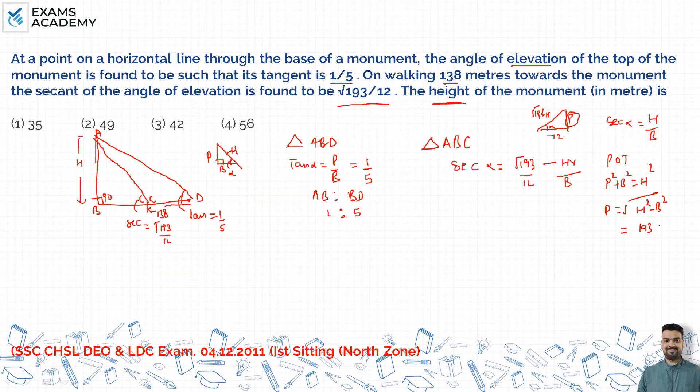Minus base is 12, then 12 squared is 144. So it is root 49, so perpendicular should be 7. Now look, perpendicular is 7, clear?